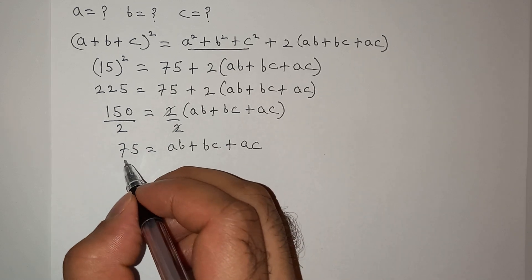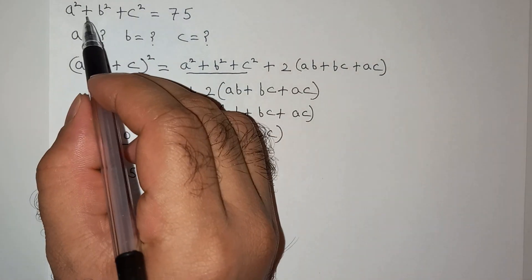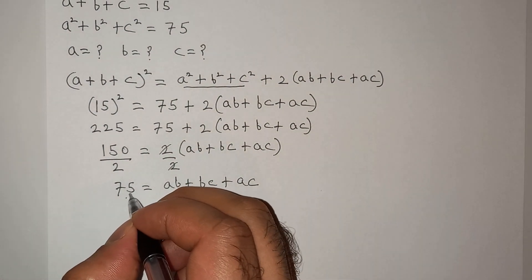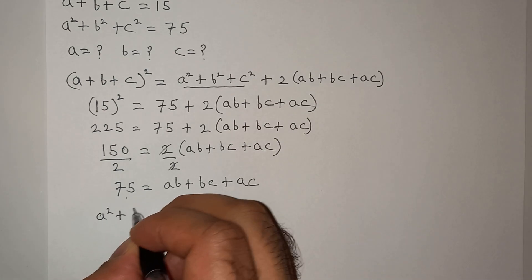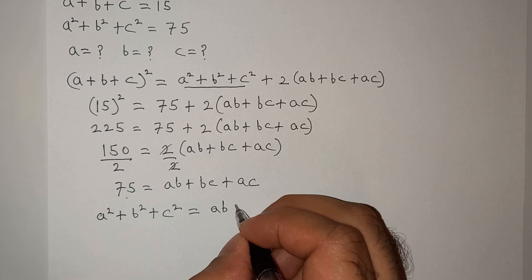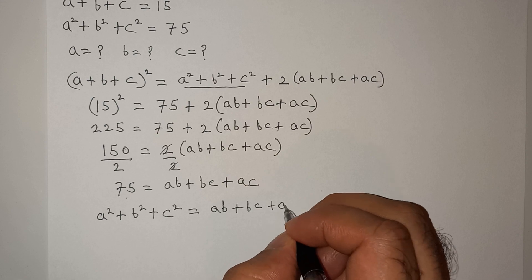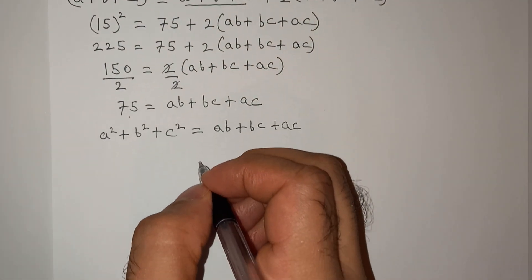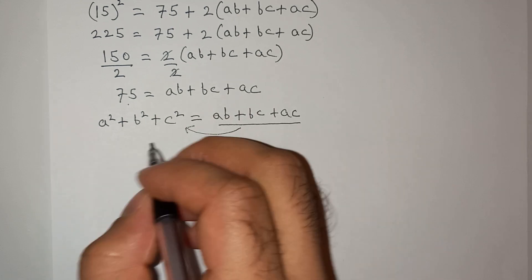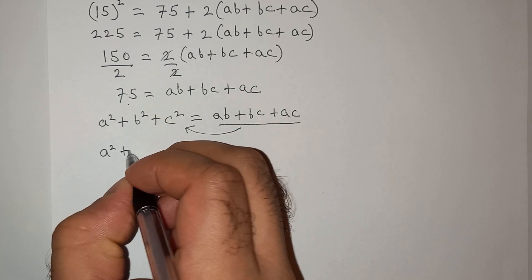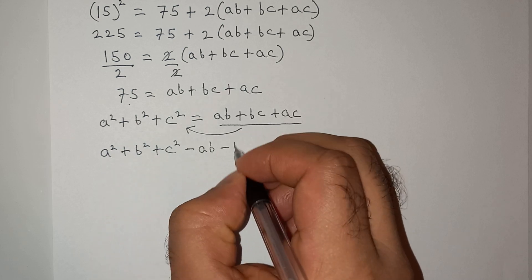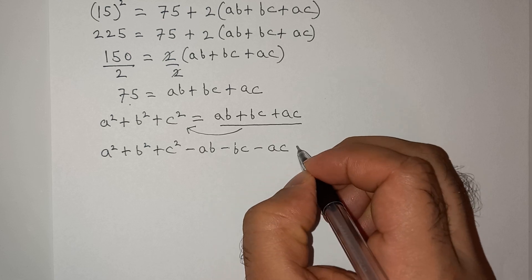Now, 75 is also equal to a squared plus b squared plus c squared. So we can write a squared plus b squared plus c squared equals ab plus bc plus ac. Taking the right-hand side to the left, we get a squared plus b squared plus c squared minus ab minus bc minus ac equals 0.